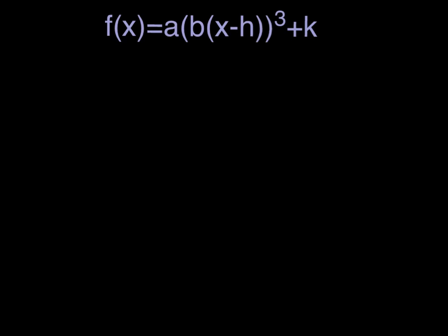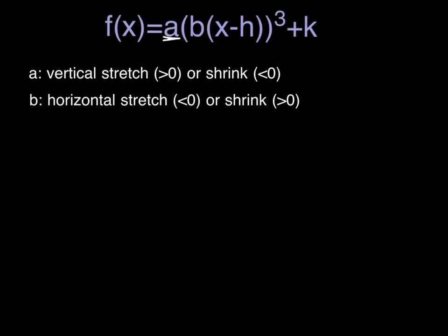Okay, so now we're going to add all of our transformations to the basic cubic function. And we've done this before with several other types of functions, so this should be familiar. The a value right here is your vertical stretch or shrink. And remember, if it's greater than 1, it's the stretch. And if it's less than 1, it's your shrink. The b is your horizontal stretch or shrink. And remember, that's opposite. So if b is less than 1, it stretches. And if b is greater than 1, it shrinks horizontally.